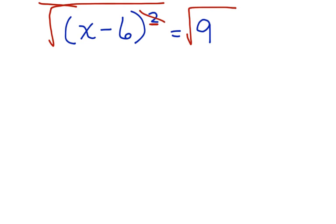The square root and the square cancel each other, leaving us with x minus 6 equals the square root of 9, which could be a positive 3 or a negative 3. Now, because we have a positive 3 or a negative 3, we can write two different equations.